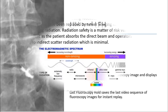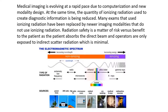Medical imaging is evolving at a rapid pace due to computerization and new modality design. At the same time, the quantity of ionizing radiation used to create diagnostic information is being reduced. Many exams that use ionizing radiation have been replaced by newer imaging modalities that do not use ionizing radiation, such as MRI and ultrasound. Radiation safety is a matter of risk versus benefits to the patient — as the patient absorbs the direct beam, operators are only exposed to minimal scatter radiation.